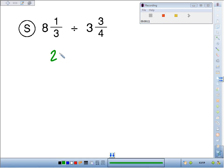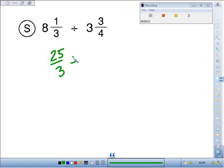8 times 3 is 24, plus 1 is 25. We've got 25/3 divided by 3 times 4 is 12, plus 3 is 15/4.